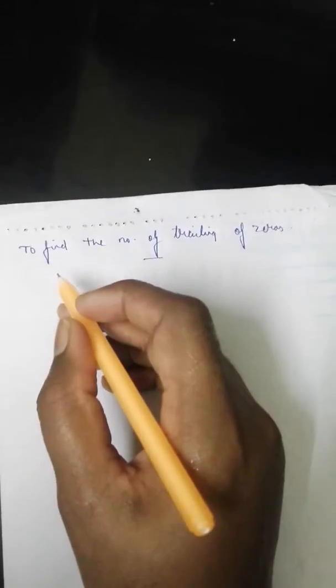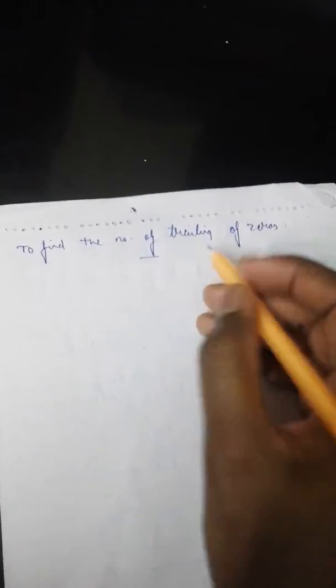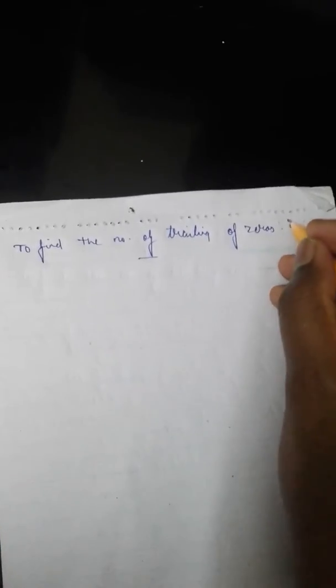Hello guys, this is Abhishek Kumar Shah and we are back with a new topic on aptitude exams. Today our topic is to find the number of trailing zeros in n factorial.